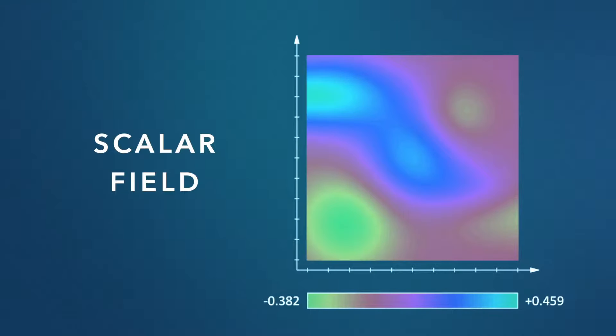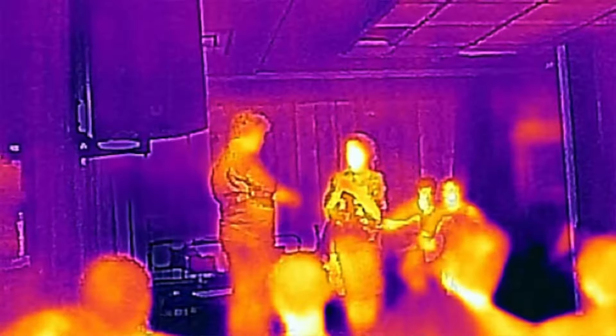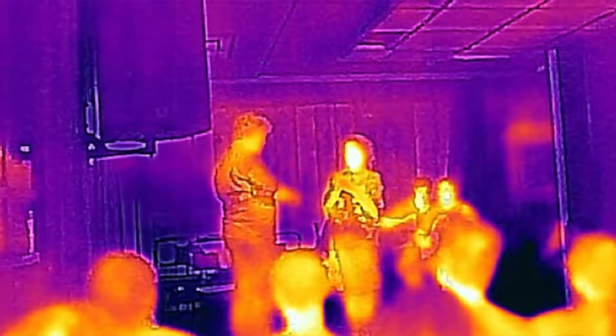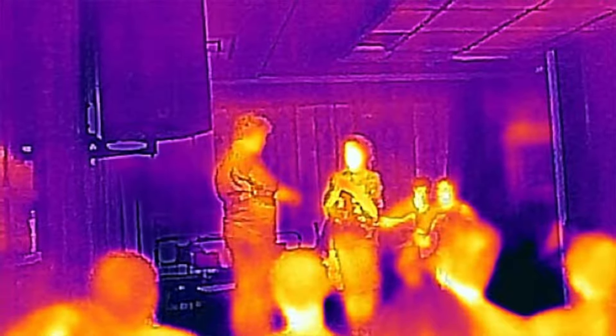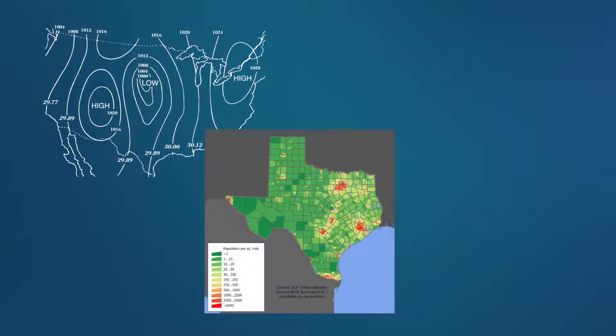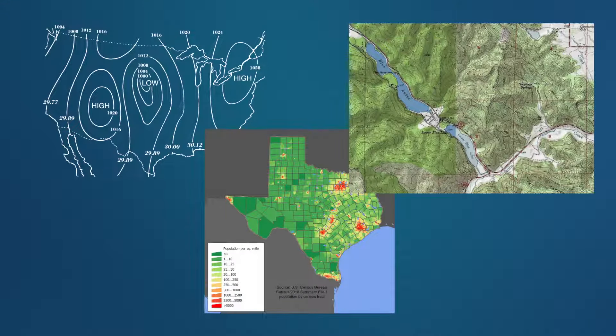A scalar field, on the other hand, is one where each point in that field has one number associated with it, usually to denote the strength of the field at that point. For example, the distribution of temperature in a room could be thought of as a scalar field, because at each location in that room, at any given moment, there is one temperature associated with that one spot. Same with air pressure, or population density, or altitude. These are all scalars, which when mapped over space and time, makes up a scalar field.